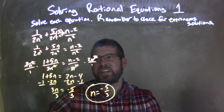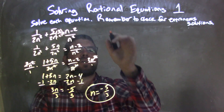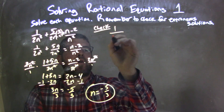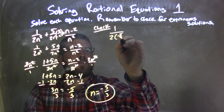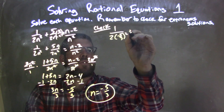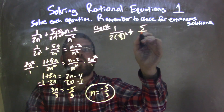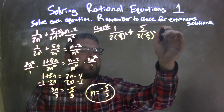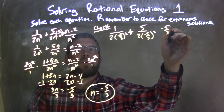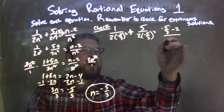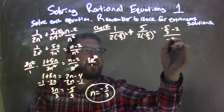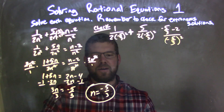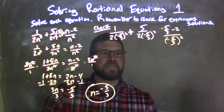We have a fraction for our answer, so now we have to check it. Let's go check our fraction. We have 1 over 2 times negative 5 thirds squared, plus 5 over 2 times negative 5 thirds, is equal to negative 5 thirds minus 2, over negative 5 thirds squared. I'm just plugging the value negative 5 thirds in for n from the beginning to save some space.